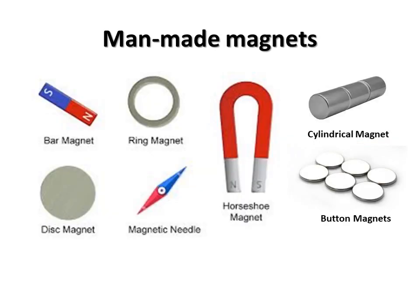Magnets can have a variety of shapes depending upon their use. Today, magnets are used in many machines and gadgets or devices. They are all man-made magnets. Here you can see various man-made magnets such as bar magnets, disc magnets, horseshoe magnets, ring-shaped magnets, cylindrical magnets, and also small button magnets — these are the different shapes of magnets in everyday use.